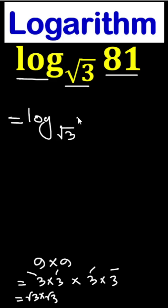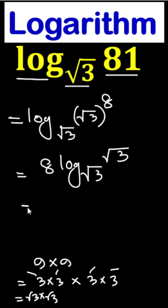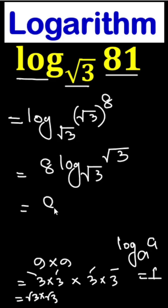It means here is root 3 to the power 8. Now, this 8 will come in front. So here is 8 times log root 3 base root 3. We know log A base A means 1. So this becomes 8 times 1, and our answer is 8.